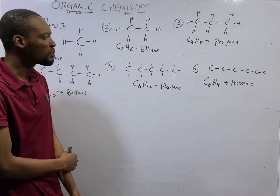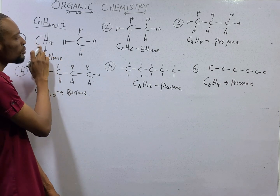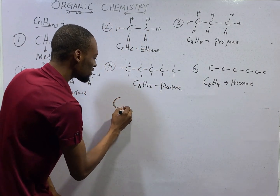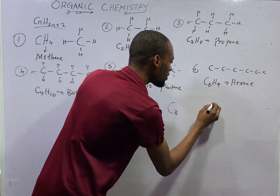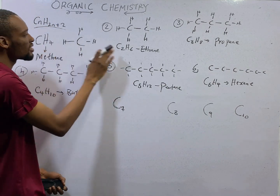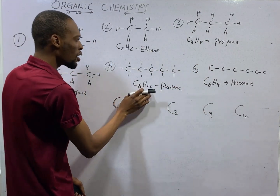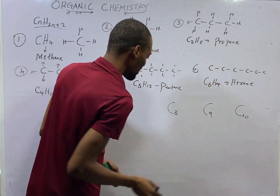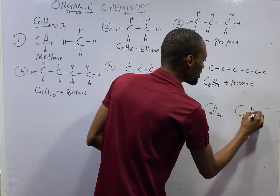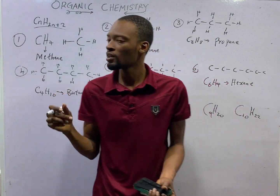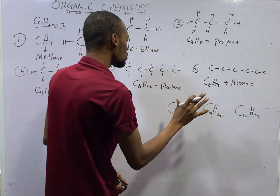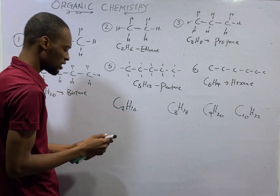If you've been following this, you will see something special. One carbon, two carbon, three carbon, four carbon, five carbon, six carbon — the next will be C7 with seven carbons, then C8, C9, and C10. Look at the trend: 4 hydrogens, 6, 8, 10, 12, 14 — so C7 will be H16, C8 will be H18, C9 will be H20, and C10 will be H22. Each member differs by one carbon and two hydrogens.